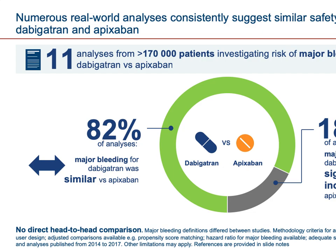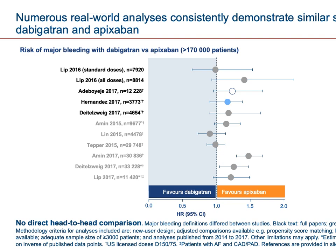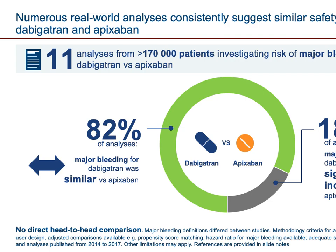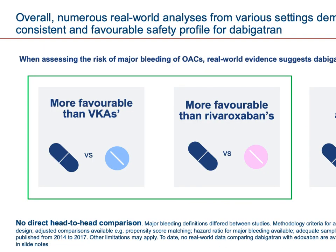When comparing dabigatran versus apixaban for major bleeding, approximately 82% of analyses showed comparable results between the two molecules. Less than one-fifth of studies reported significantly increased bleeding with apixaban. The forest plot here favors apixaban slightly, but looking at the actual data, around 82% show the two are comparable — which is one of the biggest sources of confusion regarding which agent is better for major bleeding.